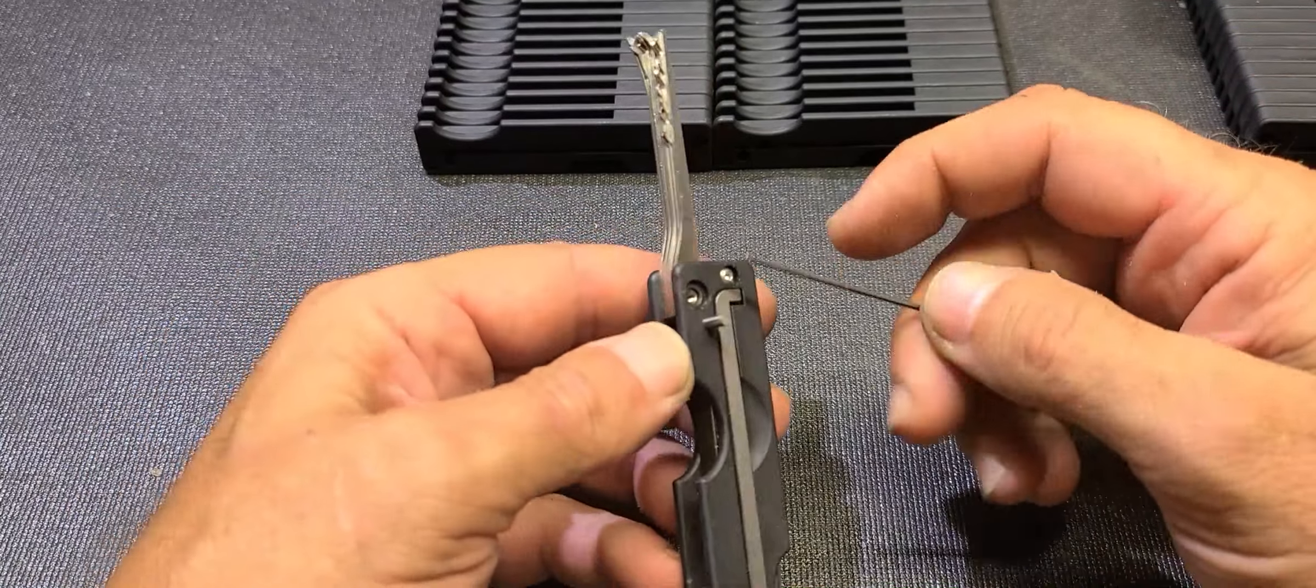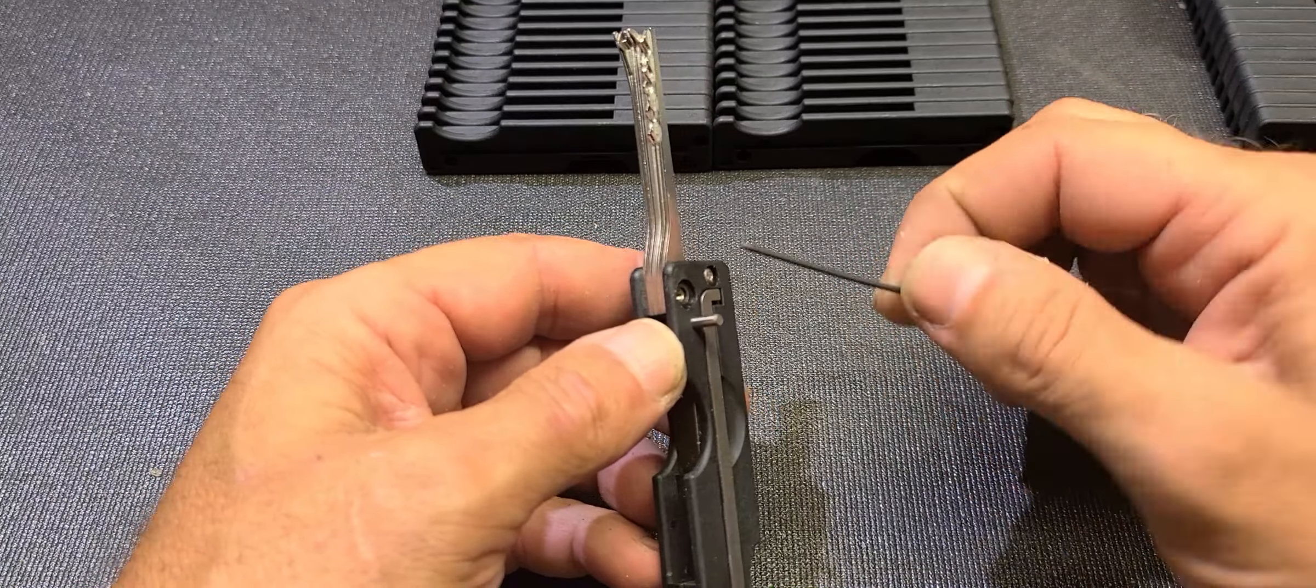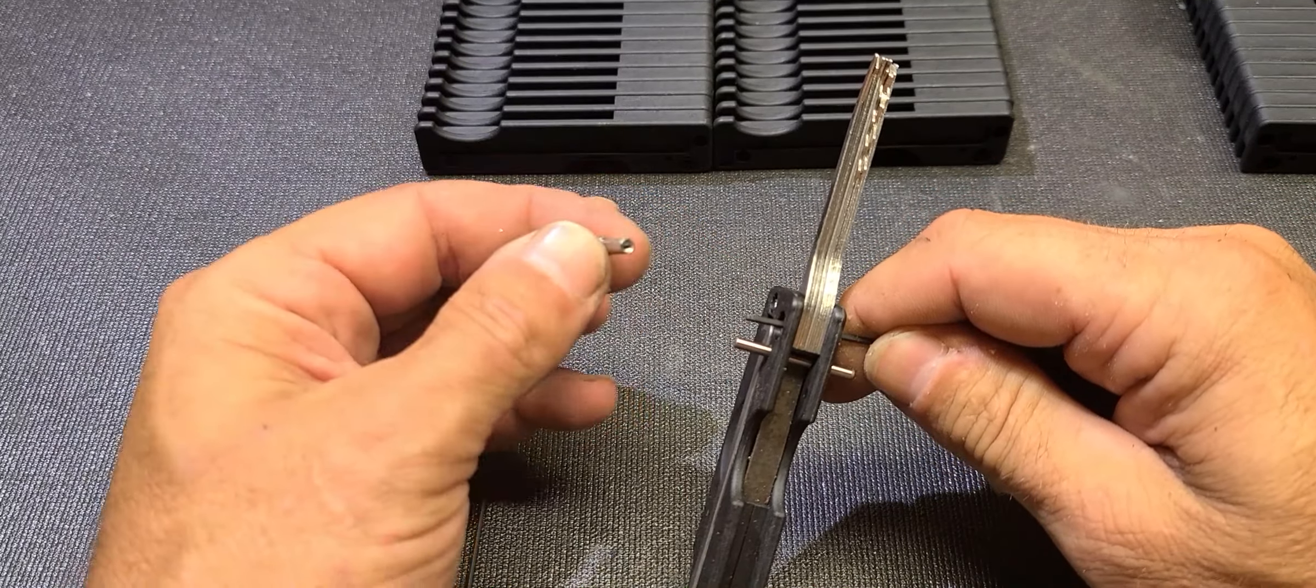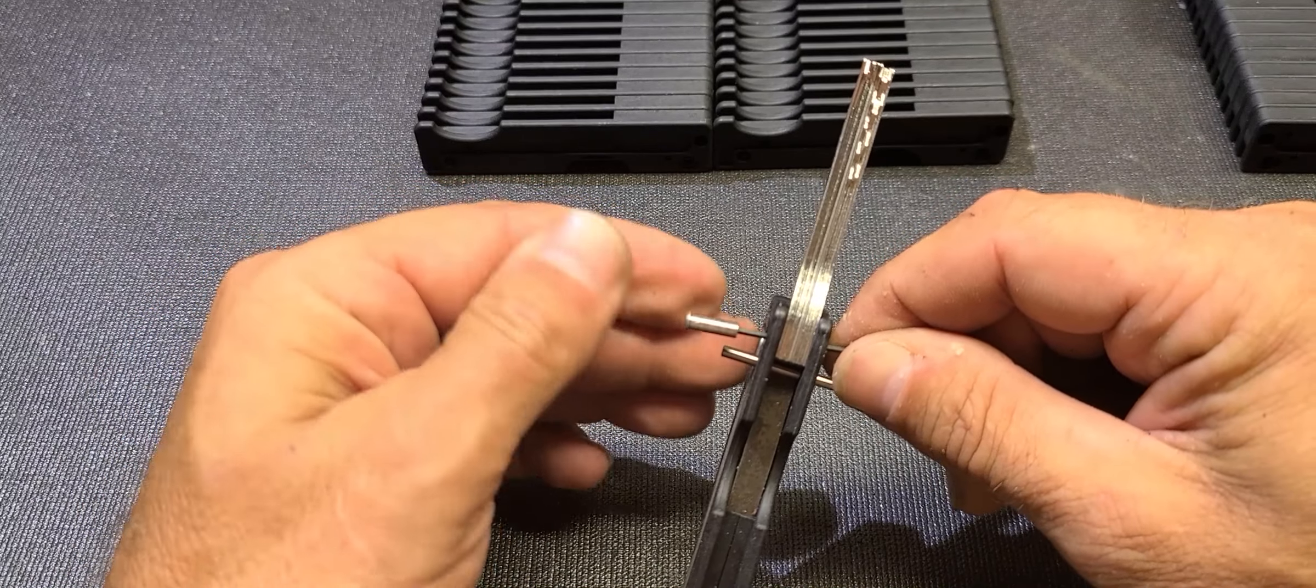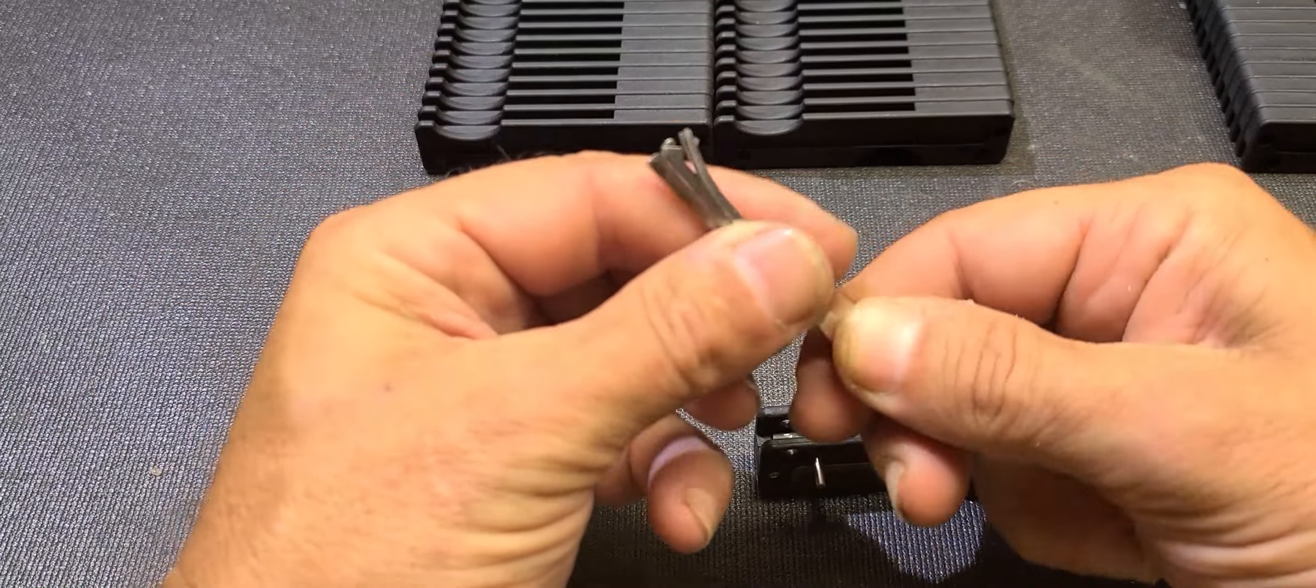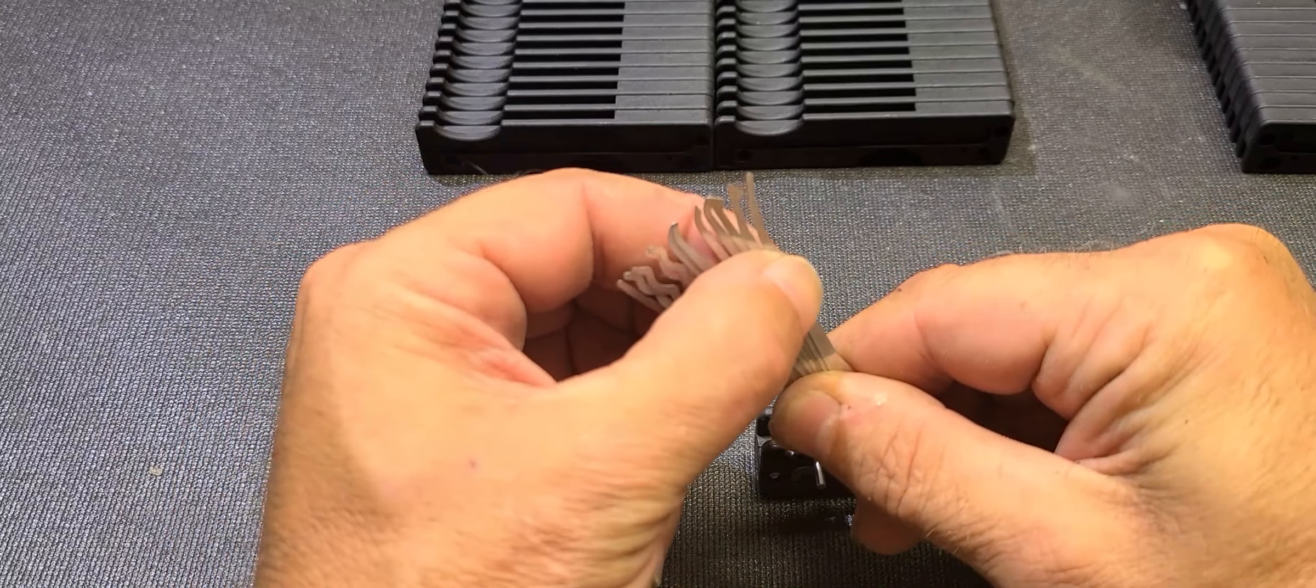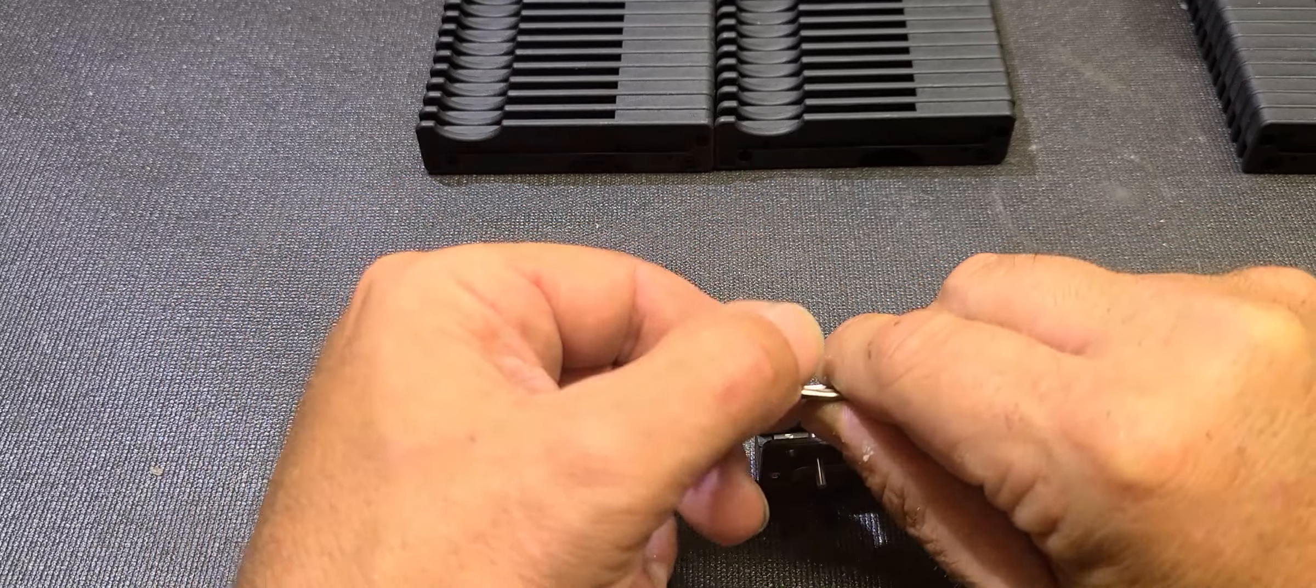So now we have that screw out. On the side that we've taken the screw out, we take our Allen tool—our Allen wrench—and we push the post out. It's a hollow post so that can go right inside there, and you can push that out. Now our blades are free. We can replace one of the broken blades, we can replace a bent blade, or we can just change the order of the picks if they're not in an order that you like.